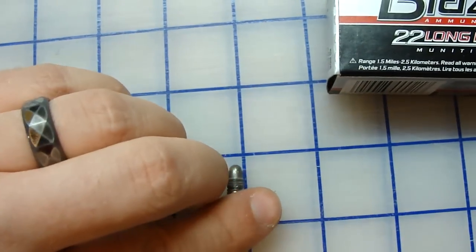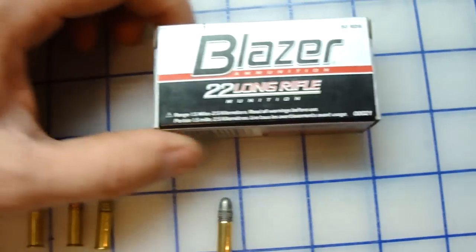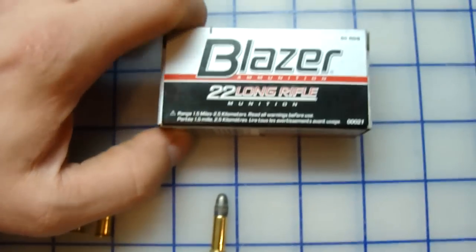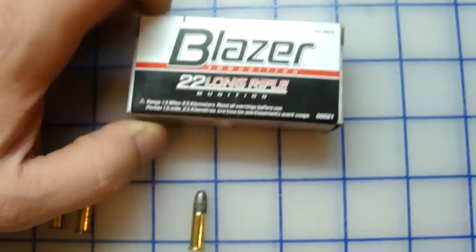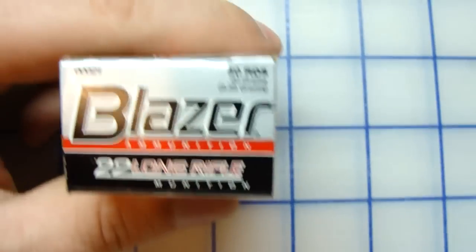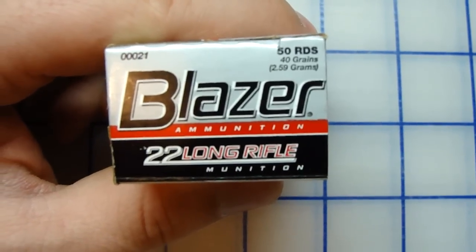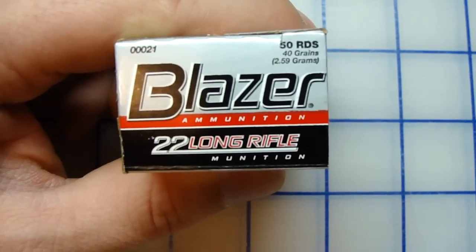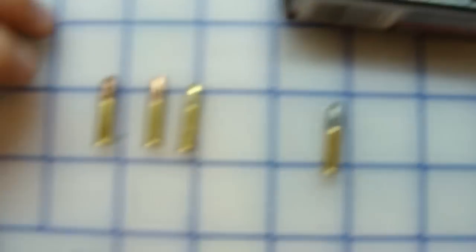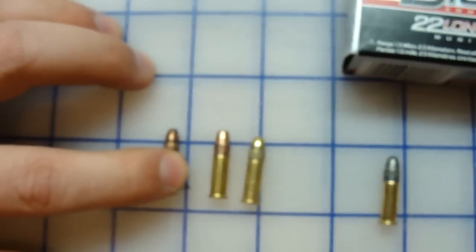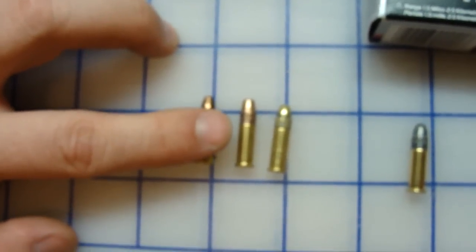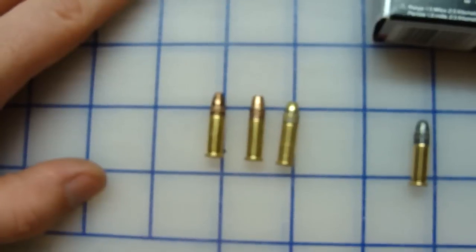This one is your Remington Golden Bullet high velocity, and this is the Blazer. 40 grain Federal is a 36 grain, and to be honest with you I'm not sure what the Winchester or the Remington is.